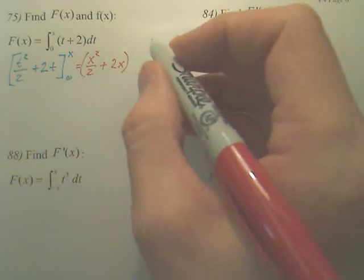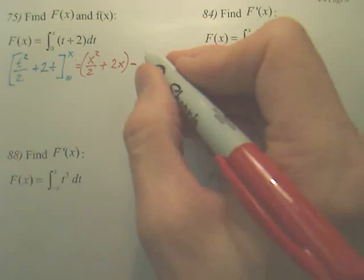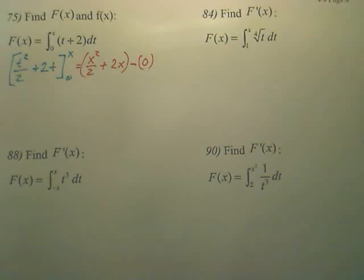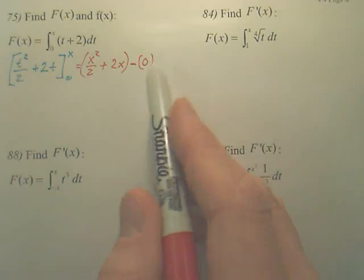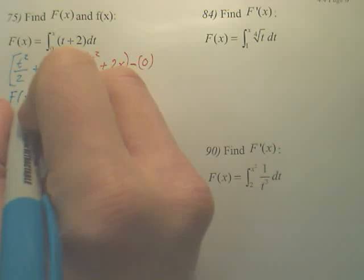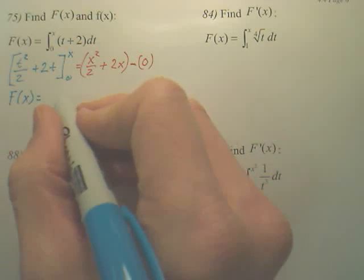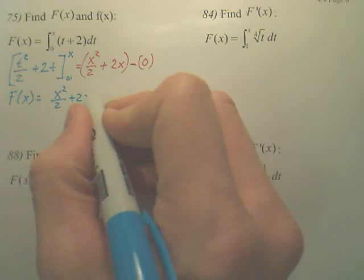That's F(x). And then for 0, when you plug in 0 here and here, that just ends up being 0. So that disappears. So F(x) is equal to x squared over 2 plus 2x.